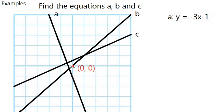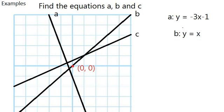For equation B, it crosses the origin, so the y-intercept is 0. The gradient is 1 to 1, which is 1. So essentially, B is y equals x.